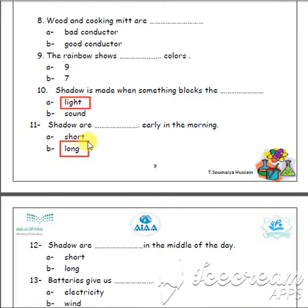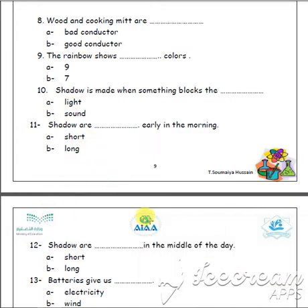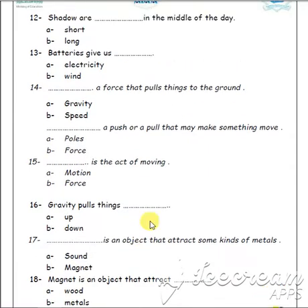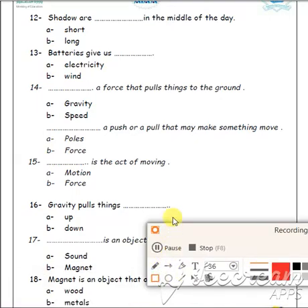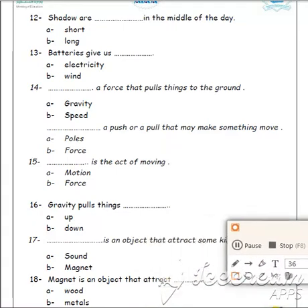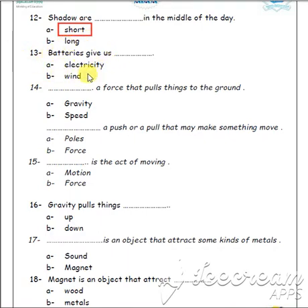Shadow is short at noon. Now let's move to page 10. Number 12: what is a shadow in the middle of the day — in the middle means at noon — short or long? Short. Number 13: batteries give us electricity or wind?